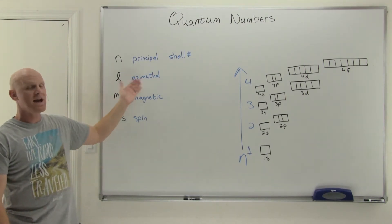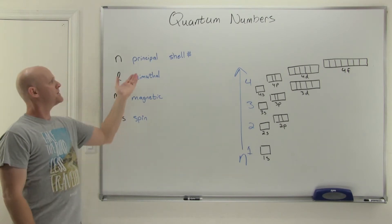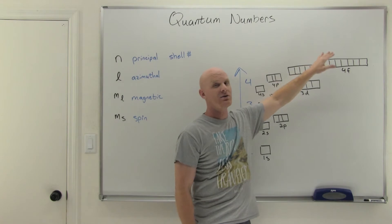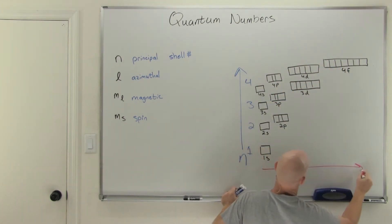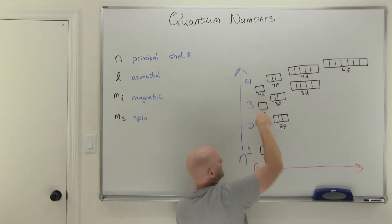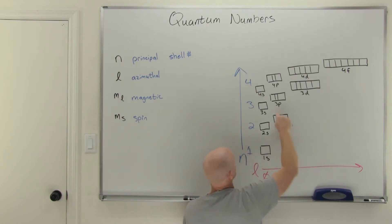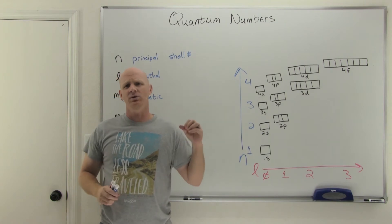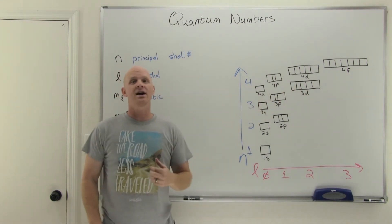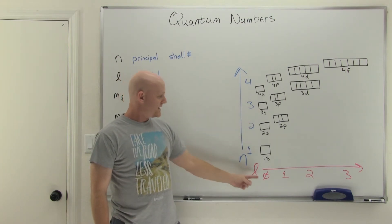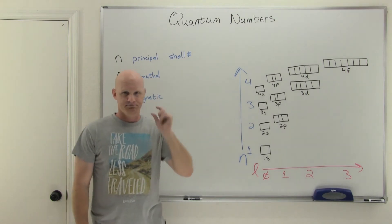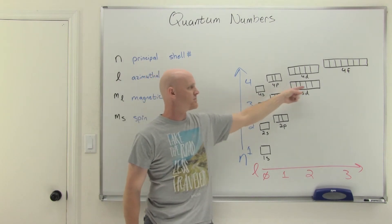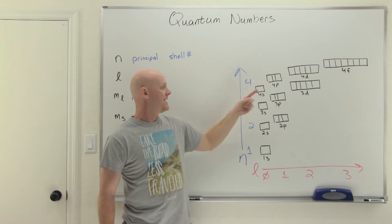The next quantum number is L, called the azimuthal quantum number — sometimes the angular momentum quantum number. It tells you which subshell you're in: S, P, D, or F. When L equals 0 you're in an S subshell; L equals 1 means a P subshell; L equals 2 means a D subshell; and L equals 3 means an F subshell. So if n equals 3 and L equals 0, that's a 3s orbital. If n equals 3 and L equals 1, you'd be in a 3p orbital.